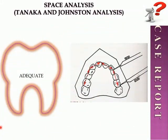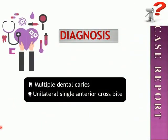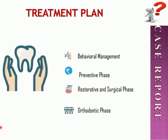Space analysis showed adequate space in the upper arch. The diagnosis was: multiple dental caries and unilateral single anterior crossbite. Our treatment plan was organized in phases. Because this is a special care patient, behavioral management was essential. The preventive phase included fissure sealants, fluoride application, diet counseling, and oral hygiene instructions. The restorative and surgical phase included pulp therapy for teeth requiring it, restoration of remaining teeth, and stainless steel crowns for hypoplastic teeth as a coronal seal — the best solution for high caries risk special care patients.